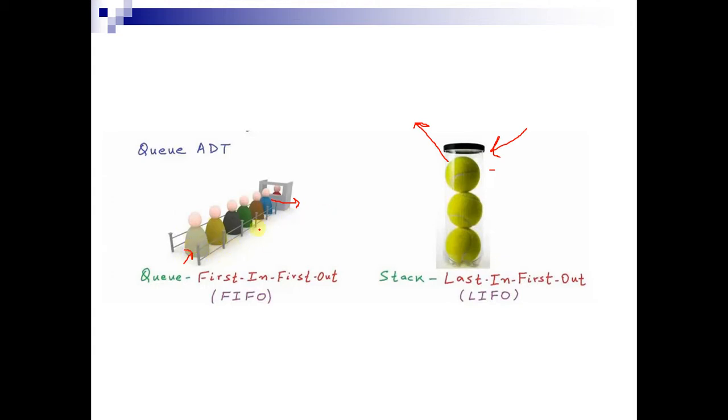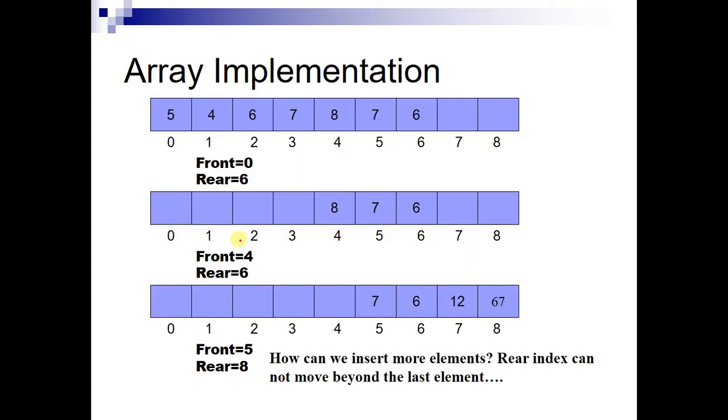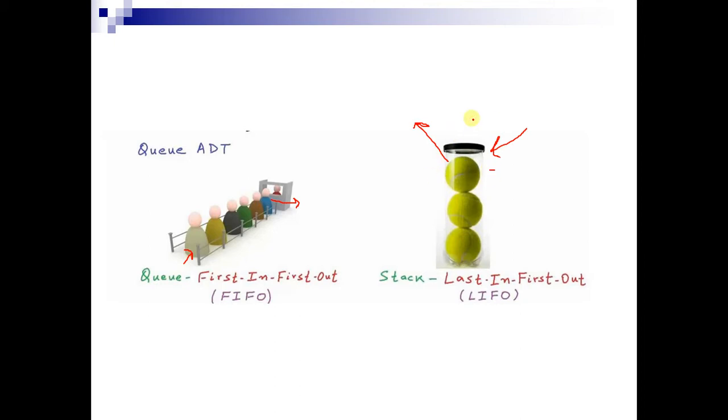We can implement this queue using an array data structure. While implementing stack we had only one index because the pushing and popping was on one end only, whereas in case of queue we use both ends. At one end we dequeue the elements and at other end we enqueue the elements. So here we will use two indexes, one will be at the rear end and other will be at the front end.